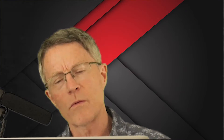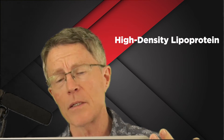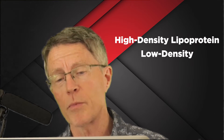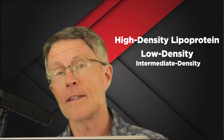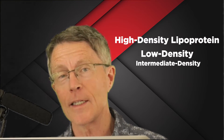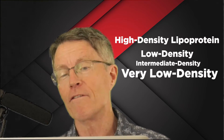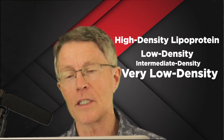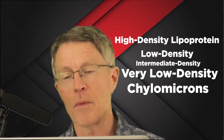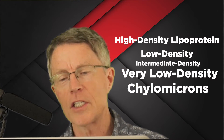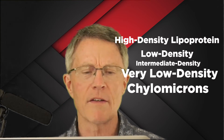That includes IDL — let's go back and remember the names. HDL is high-density lipoprotein, LDL is low-density lipoprotein, IDL is intermediate-density lipoprotein, VLDL is very low-density lipoprotein, and chylomicrons. All of these bigger, fluffy ones have a lot more triglyceride in them.